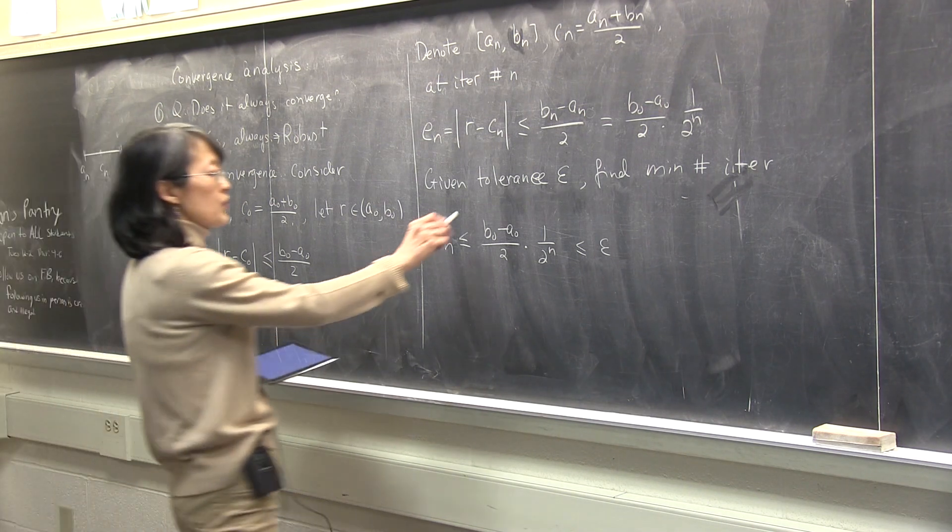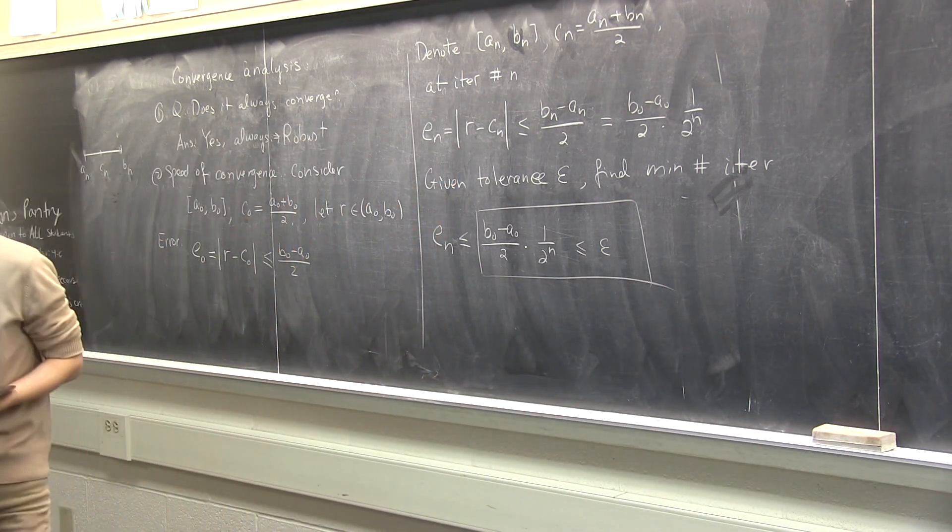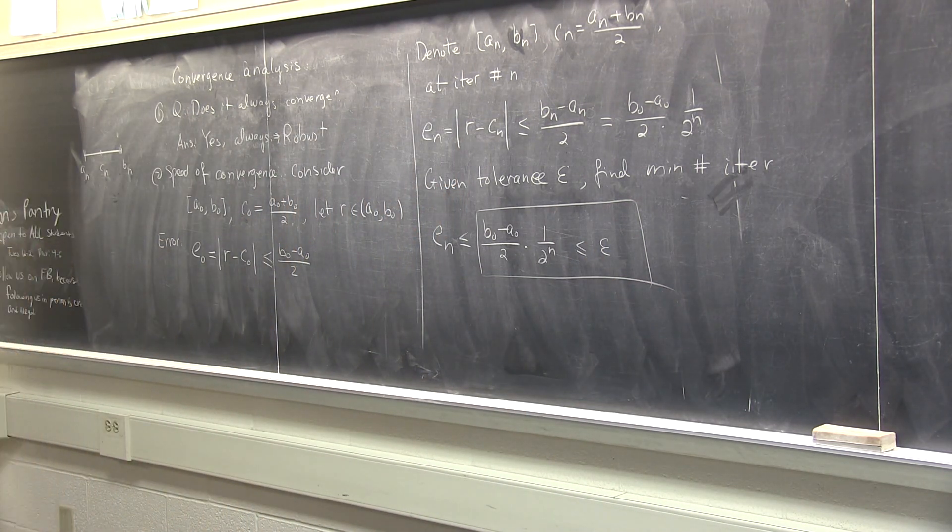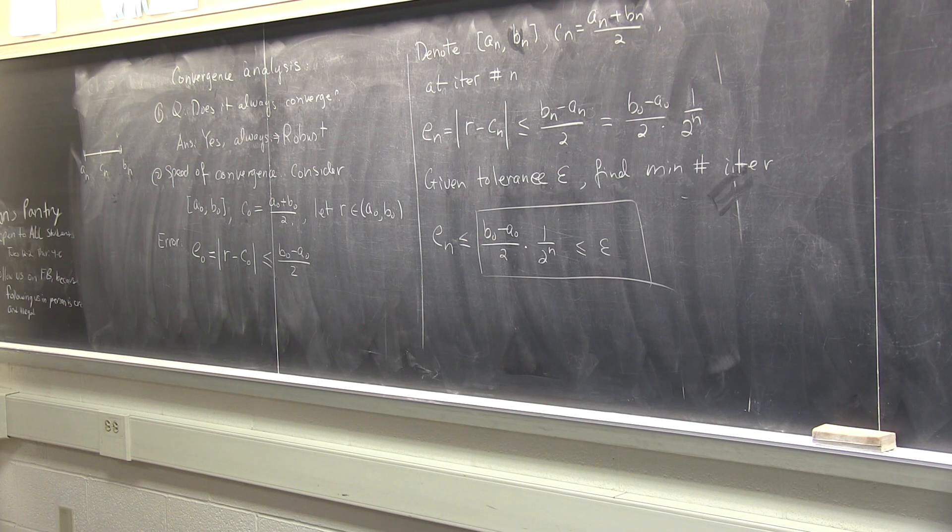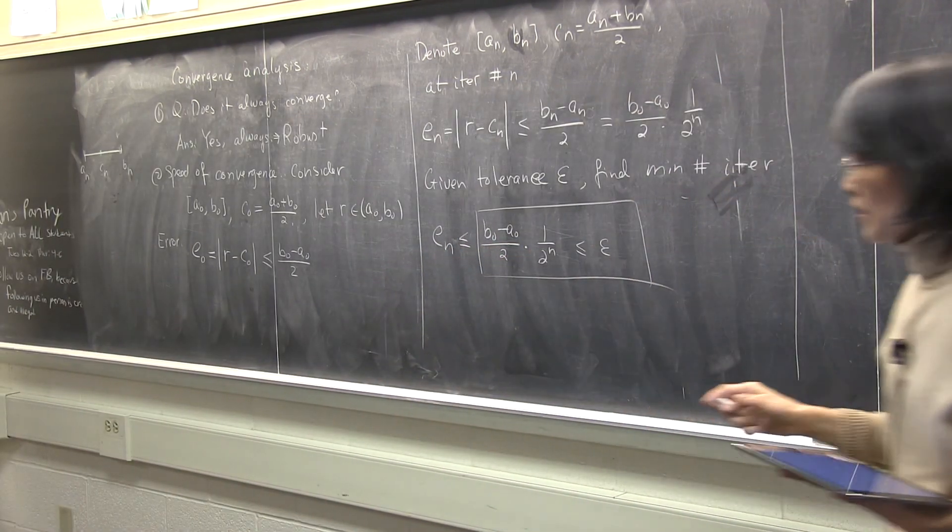So if I require the bound to be bounded by epsilon, then I know for sure the error is bounded, right? So what you have to do is just to solve this inequality and write it as n bigger than something expressed in epsilon. Is that clear? So let's do this little piece of computation. Are we okay doing this kind of a computation?